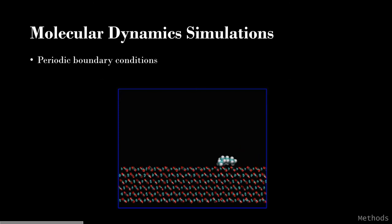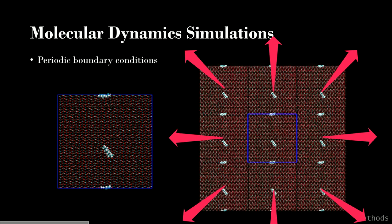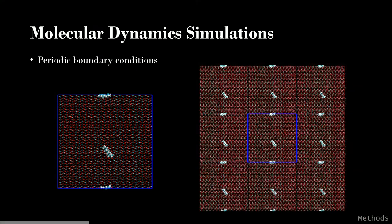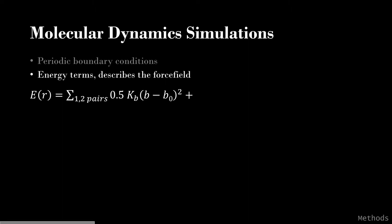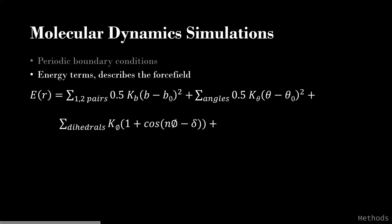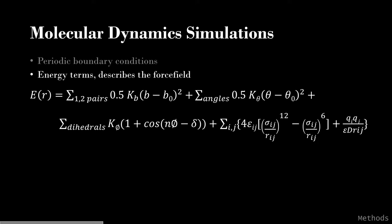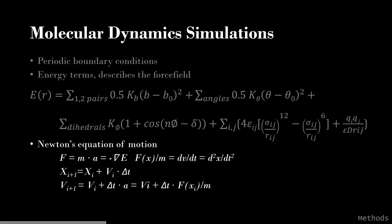This simulation is performed under periodic boundary conditions, which replicates the simulation box three-dimensionally. Periodic boundary conditions allow us to study microscopic phenomena by modeling a small system. Molecular dynamics simulation uses energy terms to describe particle movement and their interactions. The first term defines the bonding distance between two bonded atoms; the second is the bond angle of three bonded atoms; the third is dihedral, the torsion of four bonded atoms; and the last describes the van der Waals force of non-bonded interactions for uncharged and charged particles.